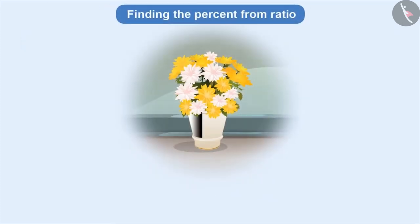Let us suppose a flower pot has some white flowers and some yellow flowers. The ratio of white flowers to yellow flowers is 3 is to 7.